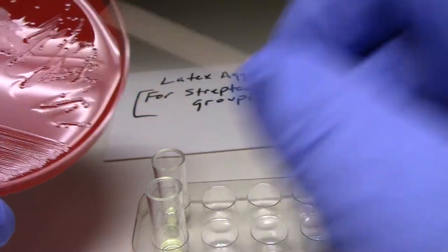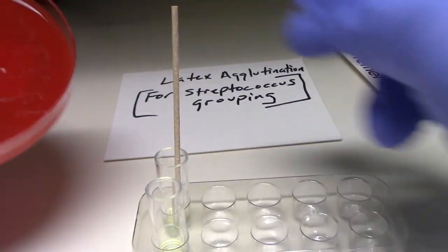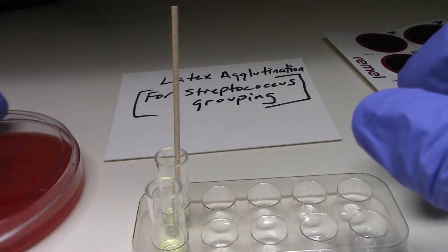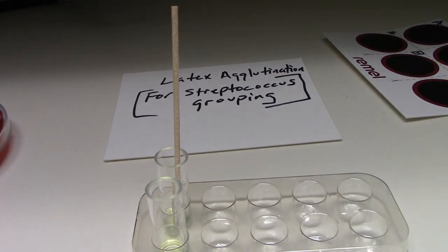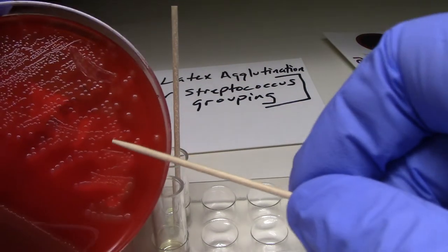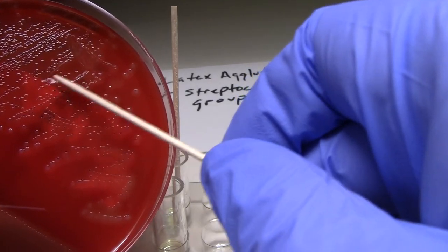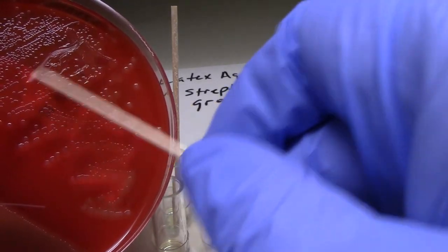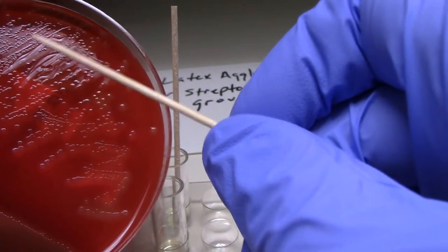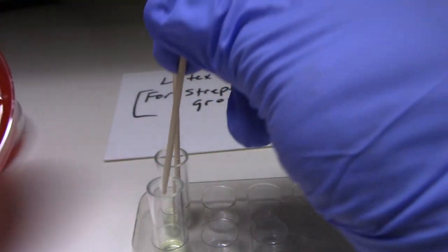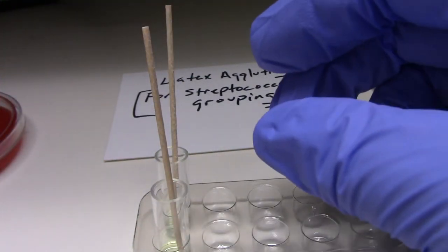So I'm going to pick some of these colonies off of the plate. I'm going to put these into the first well, or reaction cup, I should say. And then I have a second organism, a bunch of colonies. I'm going to take some of those colonies off of the plate and put that in the second reaction well.